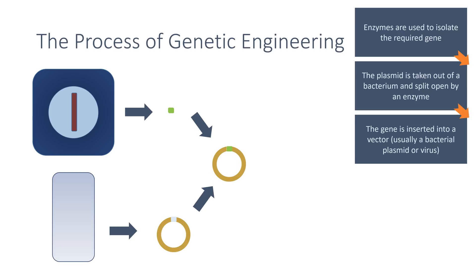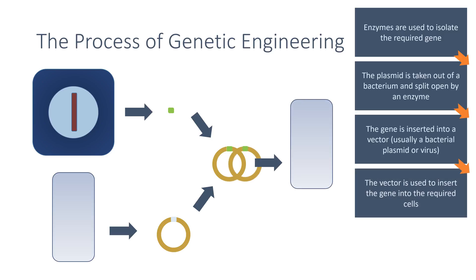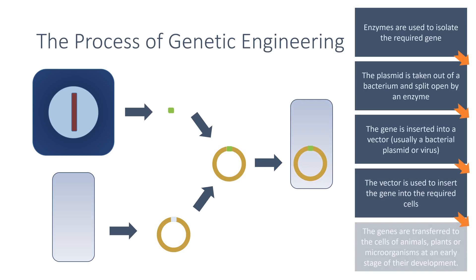If a bacterial plasmid is not used, then a virus can also be used. The vector is then used to insert the gene into the required cells, and the genes are transferred to the cells of animals, plants, or microorganisms at an early stage in their development so they can develop with the desired characteristic.